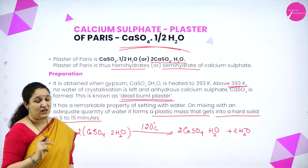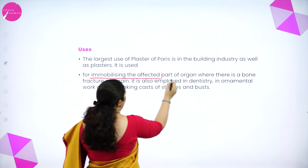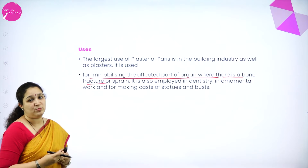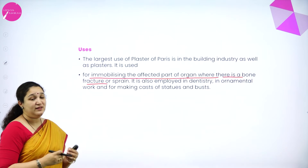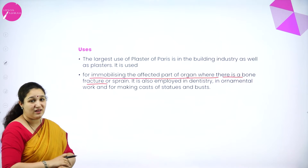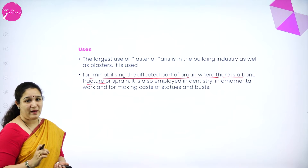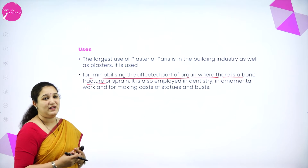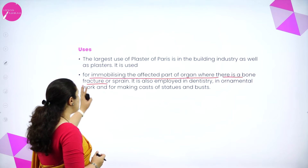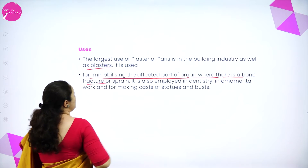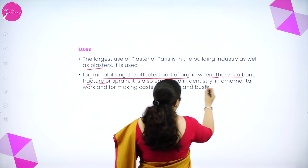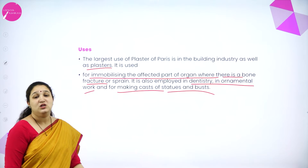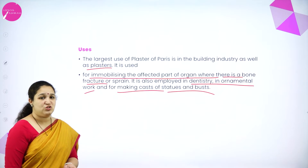Because of this rapid setting property, plaster of Paris is used in immobilizing the affected part where there is a fracture — the cast applied on broken bones is nothing but plaster of Paris. It is also used in building industries, dentistry, ornament work, and for making casts and statues.